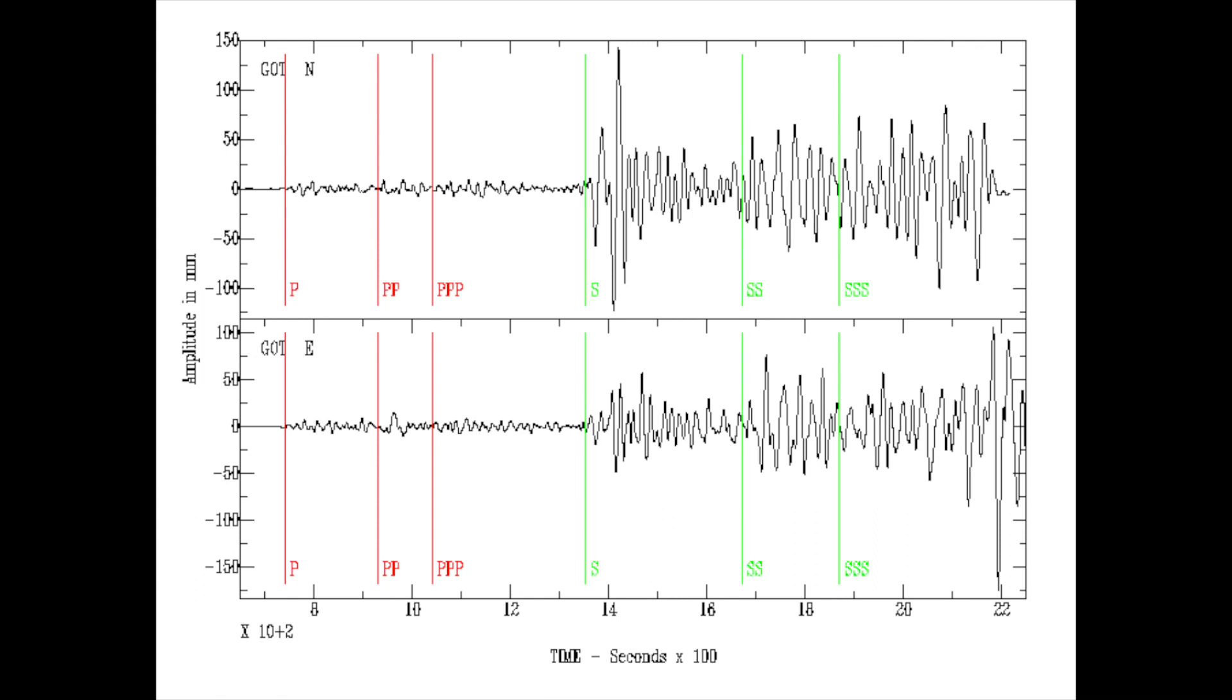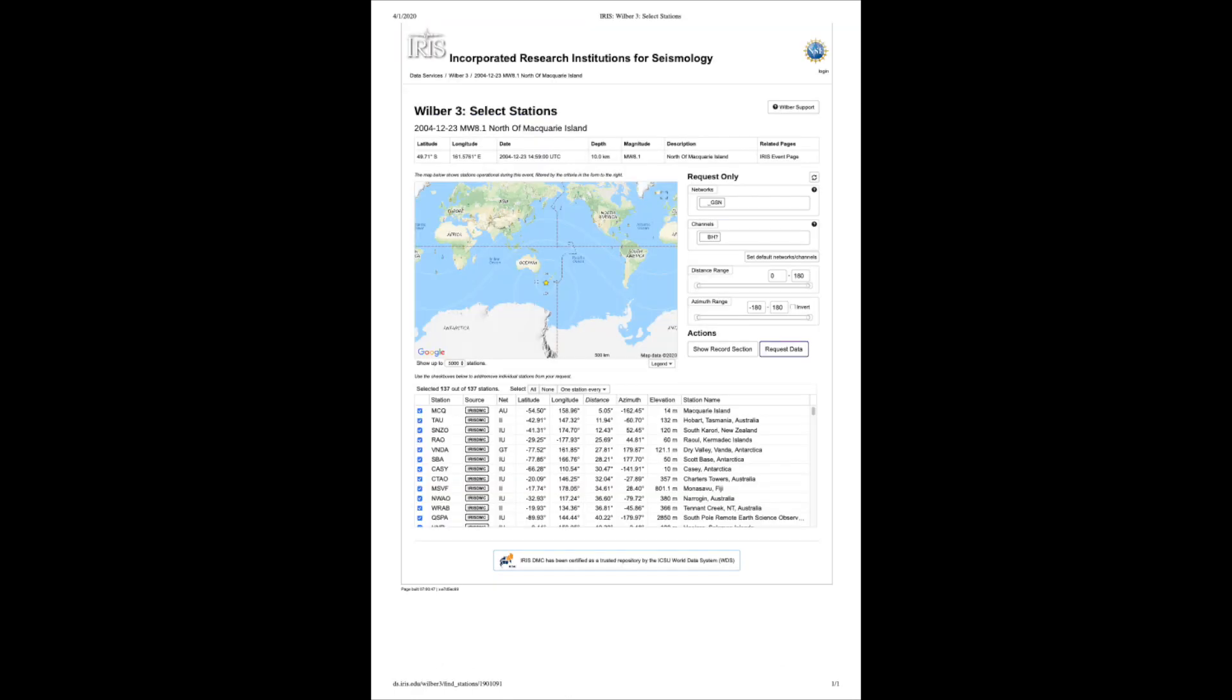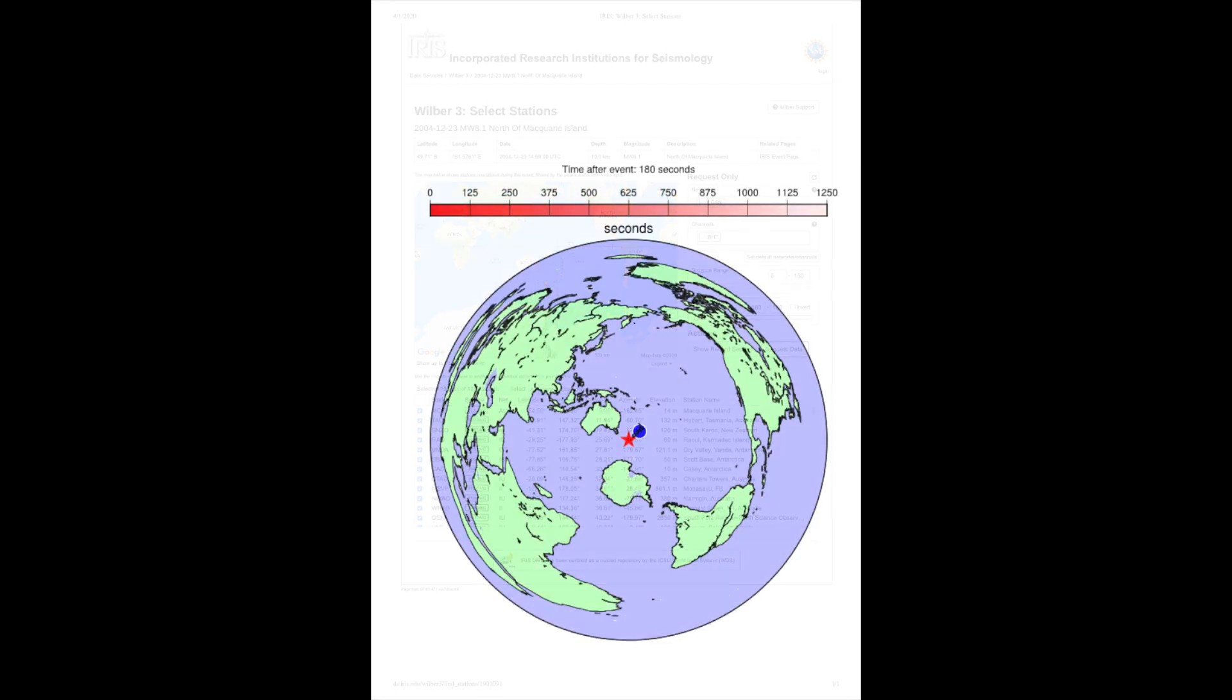But the event we're going to be focusing on today is the Macquarie Rise earthquake. This was a magnitude 8.1 event that occurred on Christmas Eve. Macquarie Rise is to the south of New Zealand, a sub-Antarctic island. The data I use for this study is obtained from the IRIS database. I'm using several hundred sites and all I'm using are the locations of the sites and the times at which they first started recording this event.